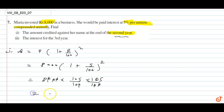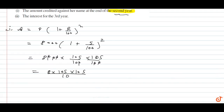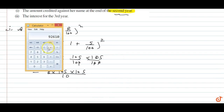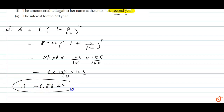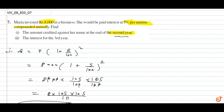Calculating: 8 × 105 × 105 divided by 10, which gives Rs. 8820. So the amount at the end of the 2nd year is Rs. 8820.